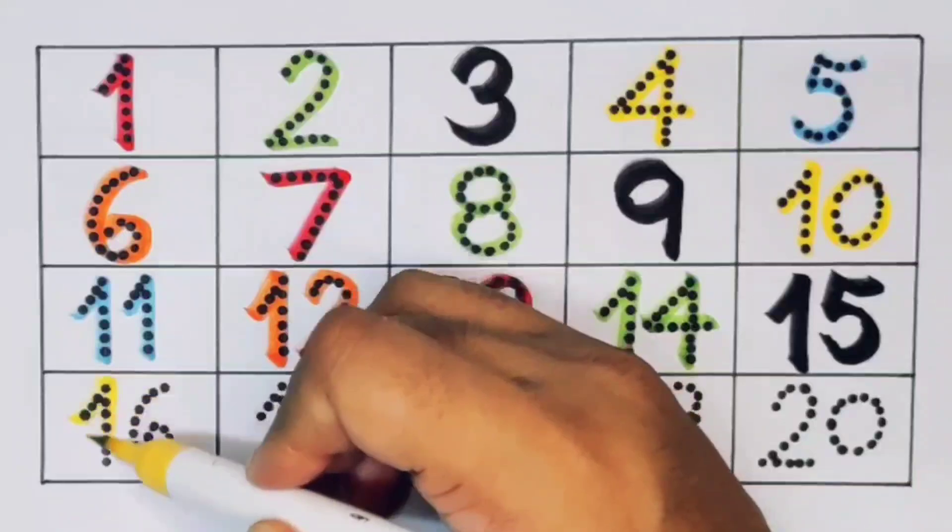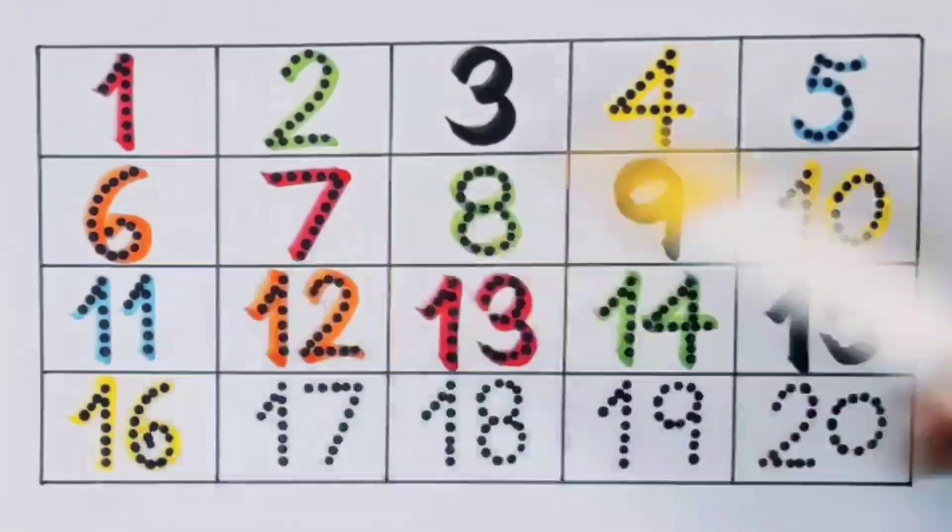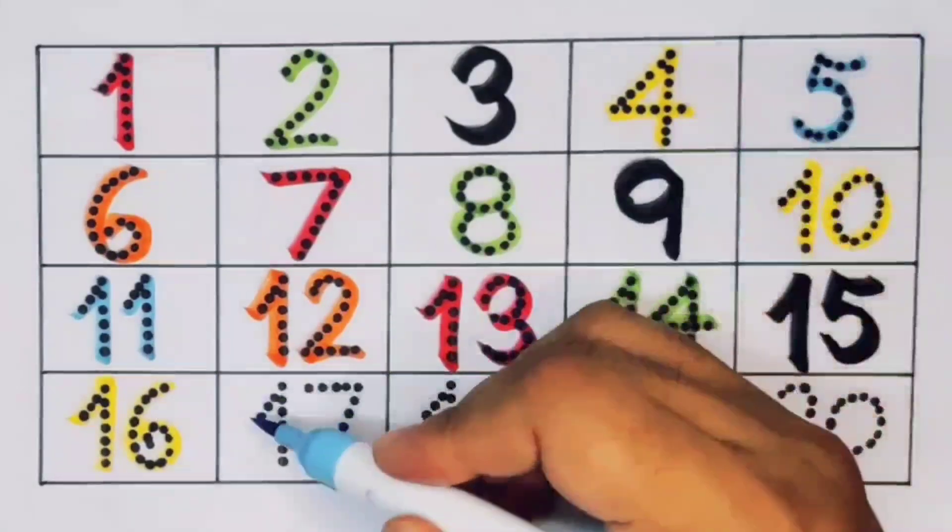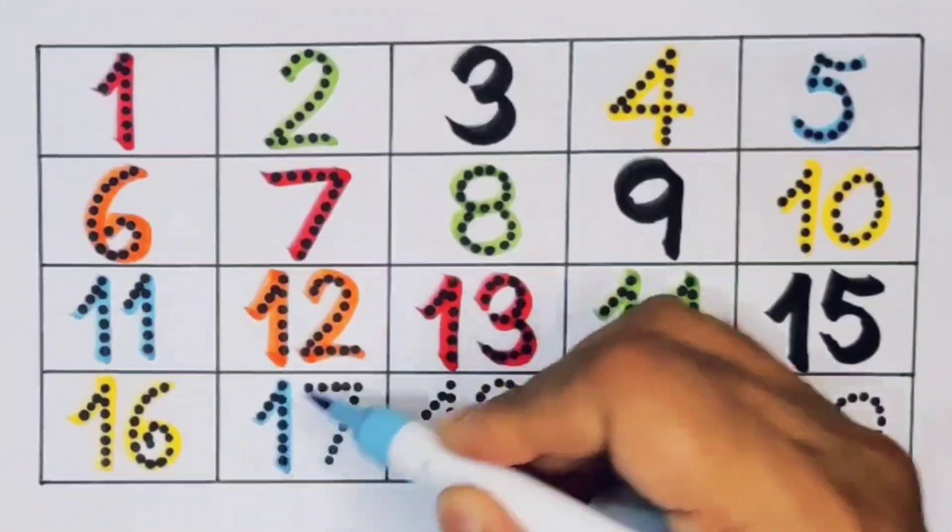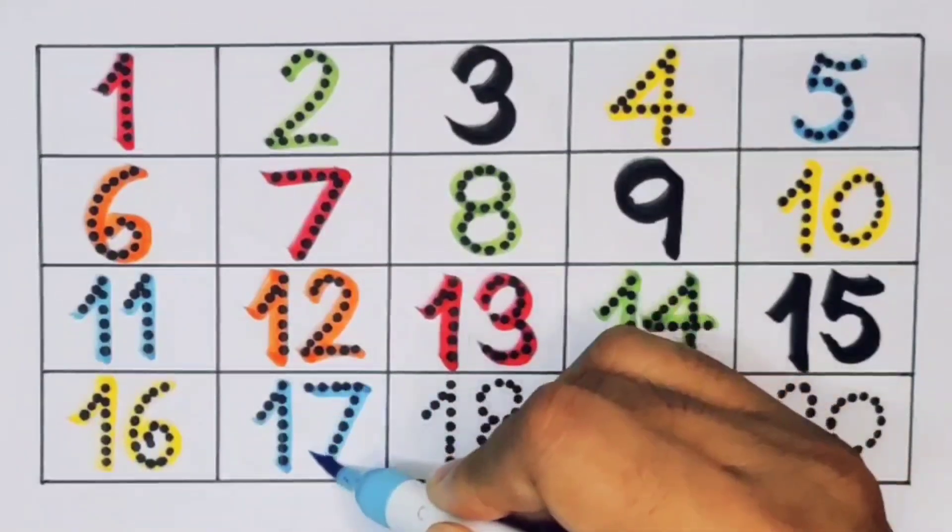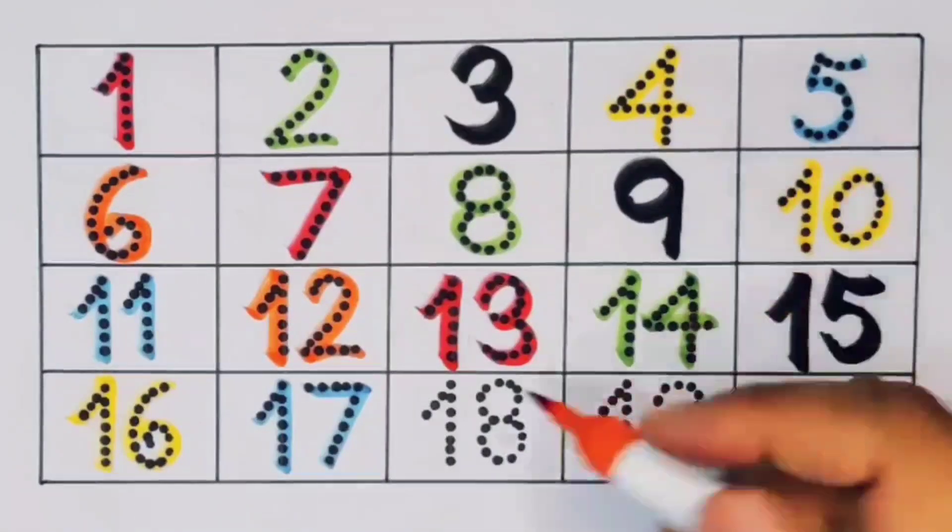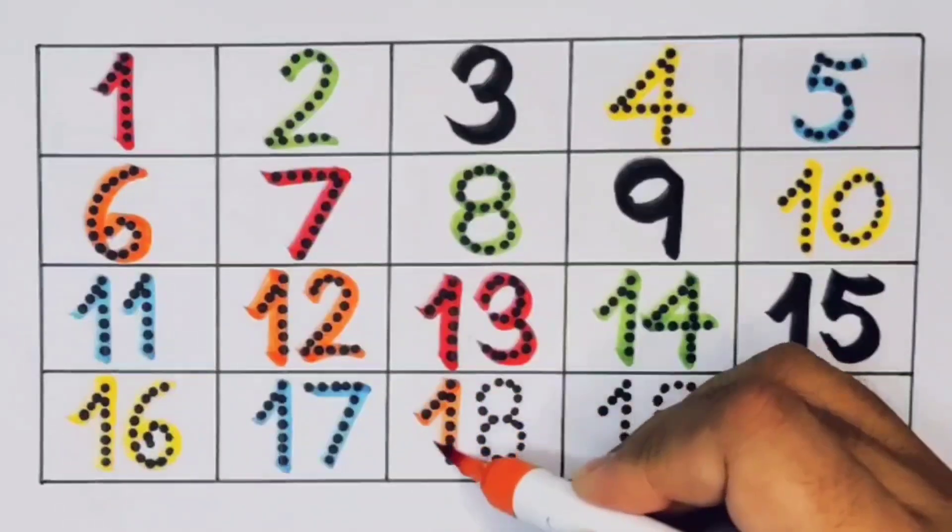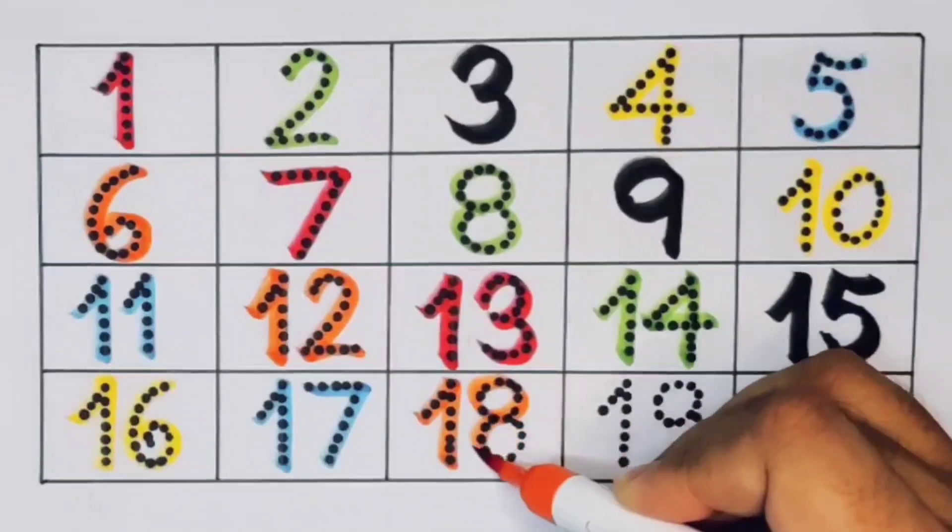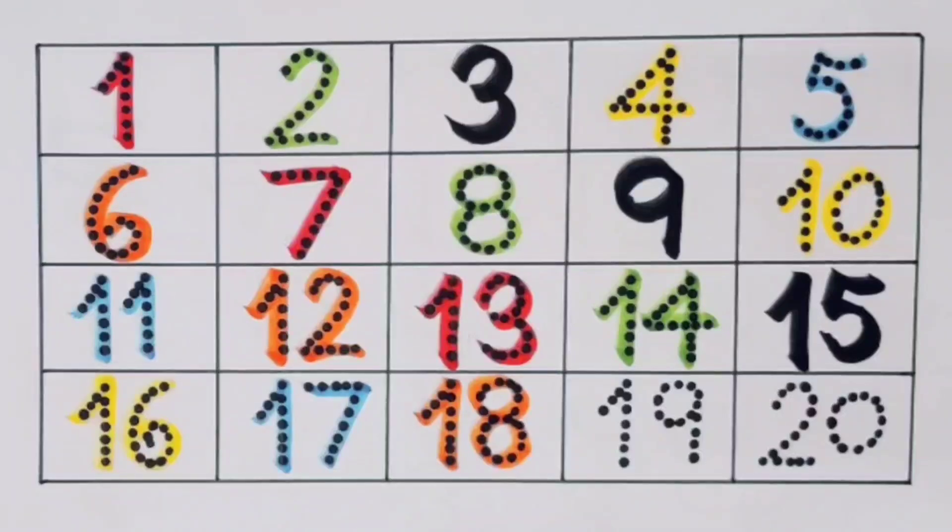Next kids 16. 1. 6. 16. Number 16. Next kids 17. 1. 7. 17. Number 17. Next kids 18. 1. 8. 18. Number 18.